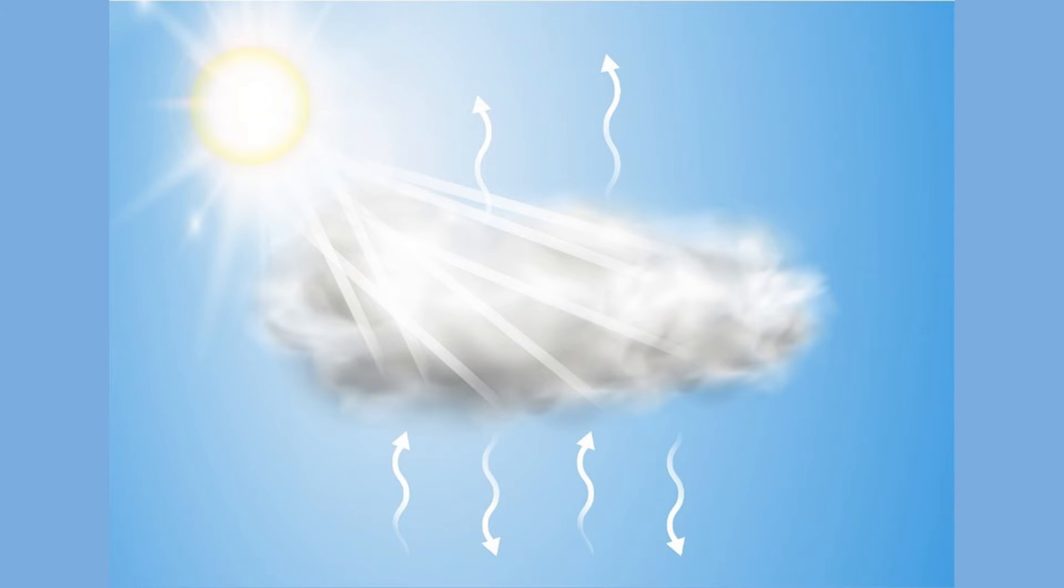Scattering in clouds doesn't just affect the visible light which is heading towards the Earth from the sun, but also the visible light which is heading back up into the atmosphere, having been reflected by the surface of the Earth.